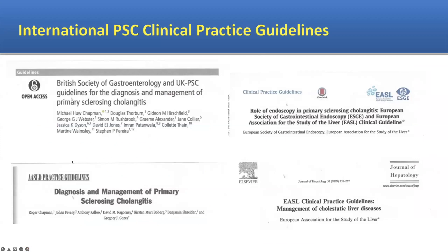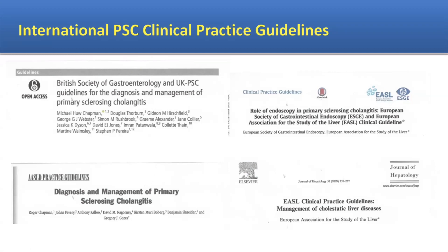A number of guidelines have been published on the management of people with primary sclerosis and cholangitis. The most recent ones are from the British Society of Gastroenterology or the UK PSC group. There are also two major societal guidelines: one from the American Association for the Study of Liver Disease, AASLD, from 2010, and one from the European group, EASL, from 2009. We'll focus more on the recent guidelines but also bring in the American and European ones.